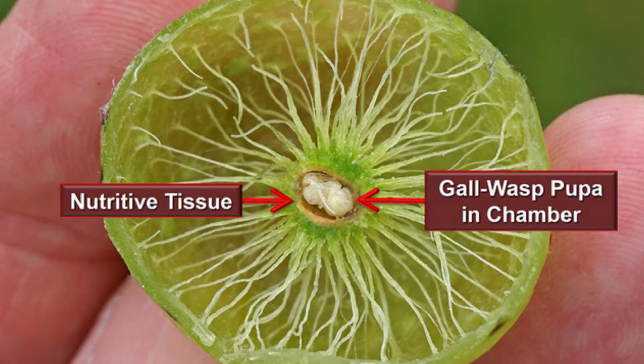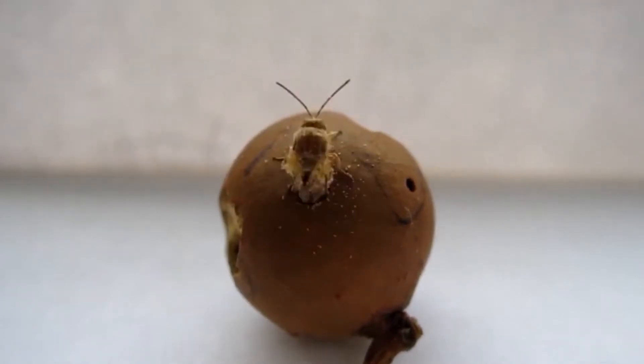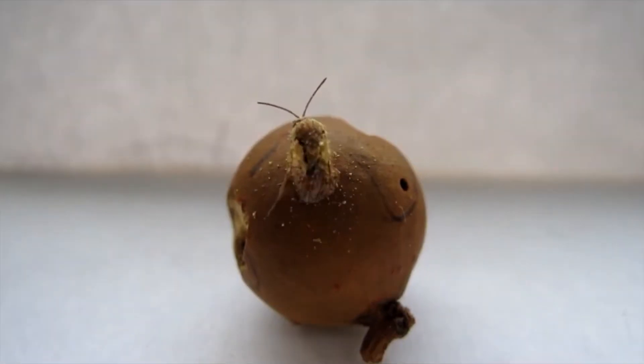Gall wasps have a very interesting life cycle. The female gall wasp finds the perfect oak tree to lay her eggs — she'll either lay them at the base of the tree or on a leaf. Once the egg hatches into a larva, the larva begins to eat the leaf. As it eats, it releases a chemical which causes the tree to grow a gall around the larva. This gall is a perfect habitat for the larva because it provides shelter from predators and food as it spends months inside growing into an adult. They don't need water during this stage. Once the larva has matured, it uses its mouth to drill through the gall.